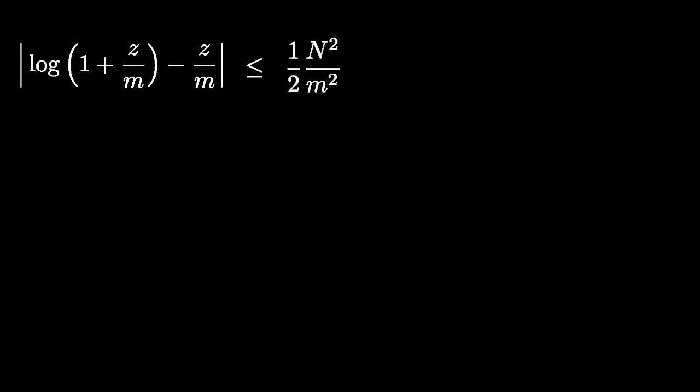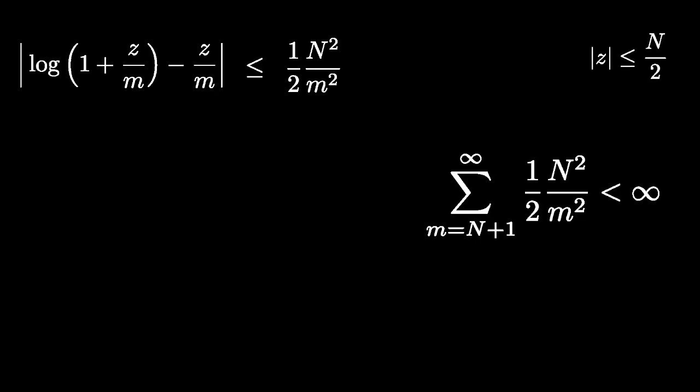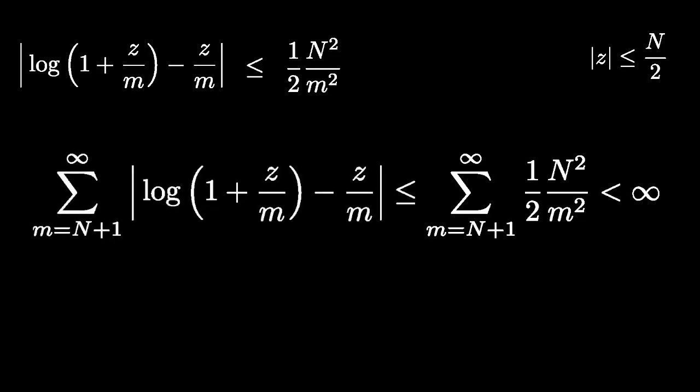Since the series from N plus 1 to infinity of Z squared over N squared converges, it follows that when the absolute value of Z is less than or equal to N over 2, that the sum of the absolute values for this expression for each M converges as well.